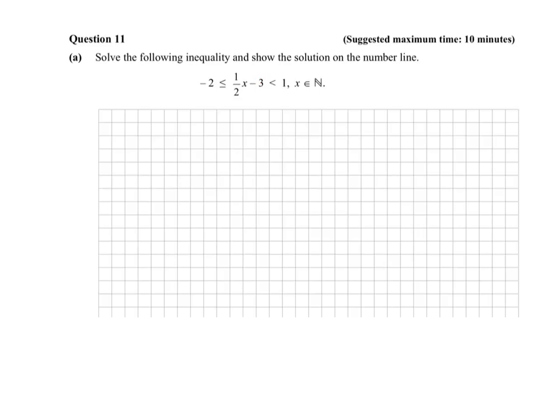So to get rid of the 3, all we have to do is add 3. So we put in a plus 3 here, and likewise, we have to balance it out by doing it here as well, and here. Carry down our less than or equal to sign.